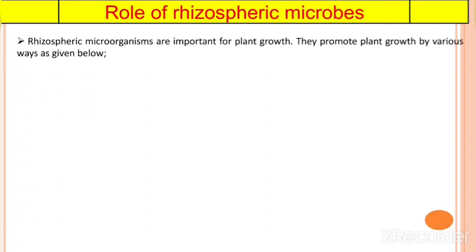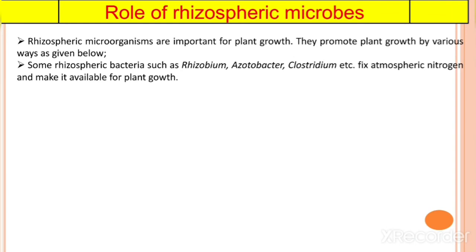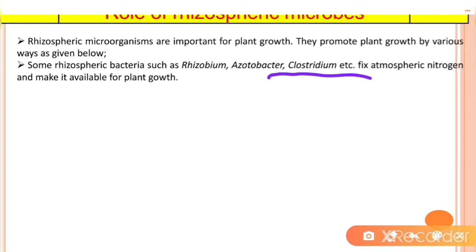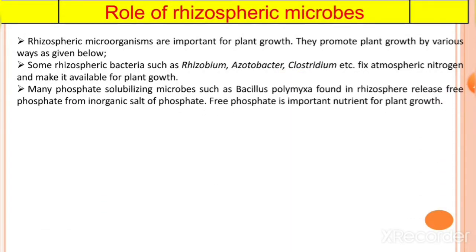The most important factor is the role of rhizospheric microbes. Rhizospheric microorganisms are important for plant growth and promote it in various ways. Some rhizospheric bacteria — such as Rhizobium, Azotobacter, and Clostridium — fix atmospheric nitrogen and make it available for plant growth. Many phosphate-solubilizing microbes such as Bacillus polymyxa found in the rhizosphere release free phosphate from inorganic salts of phosphate, which is an important nutrient for plant growth.